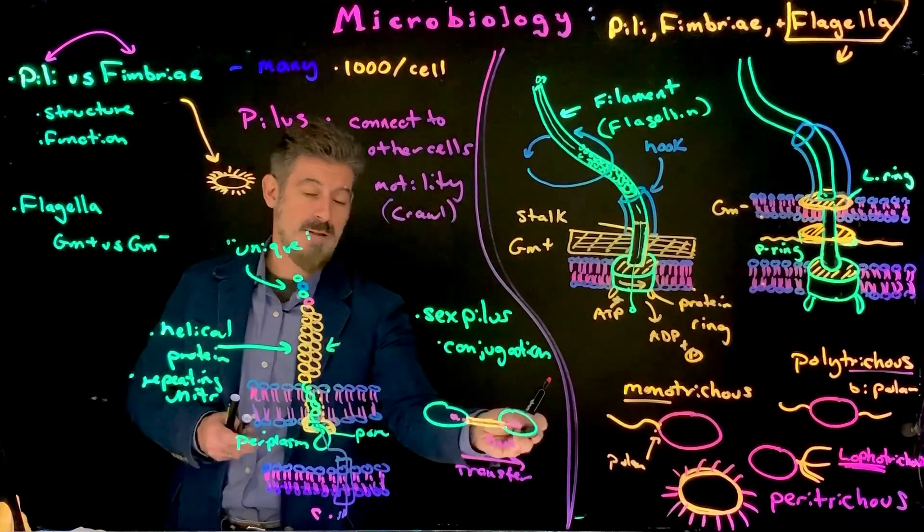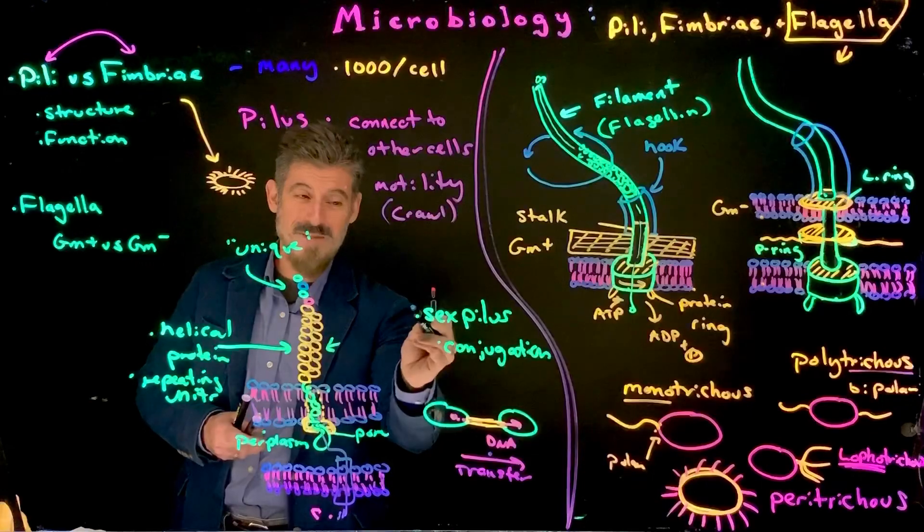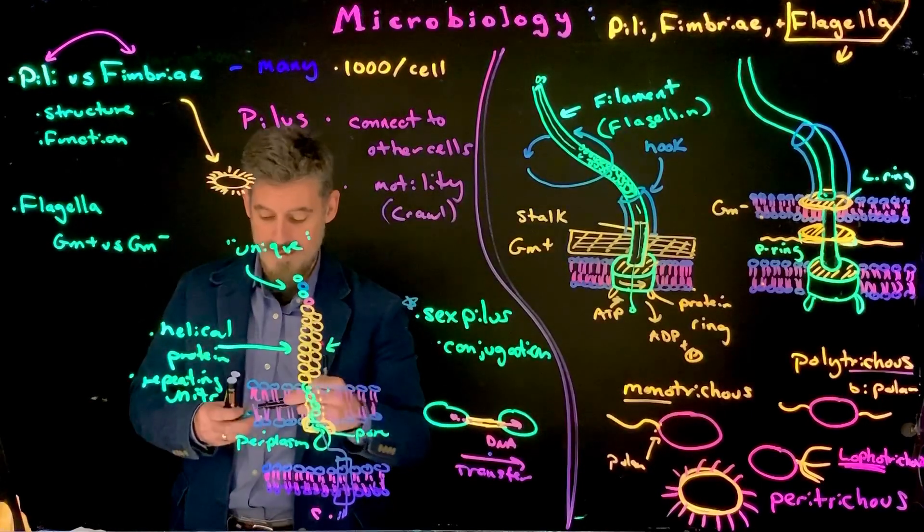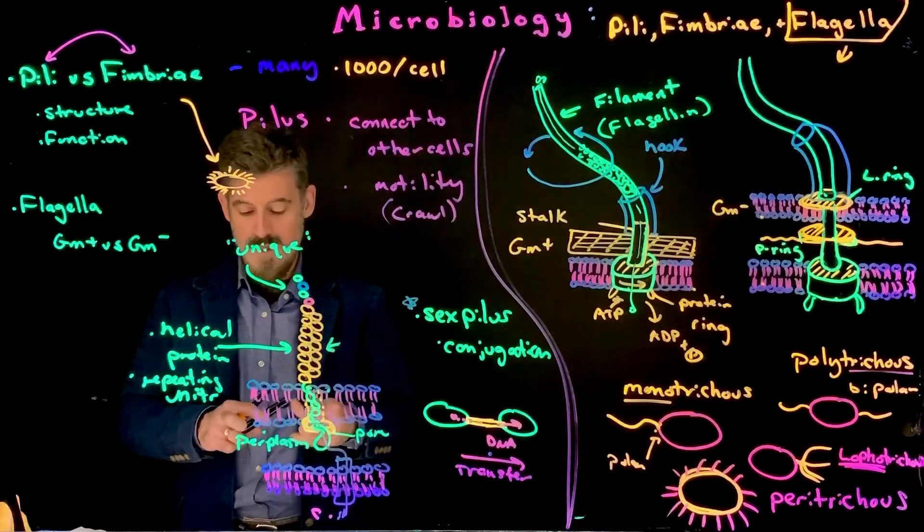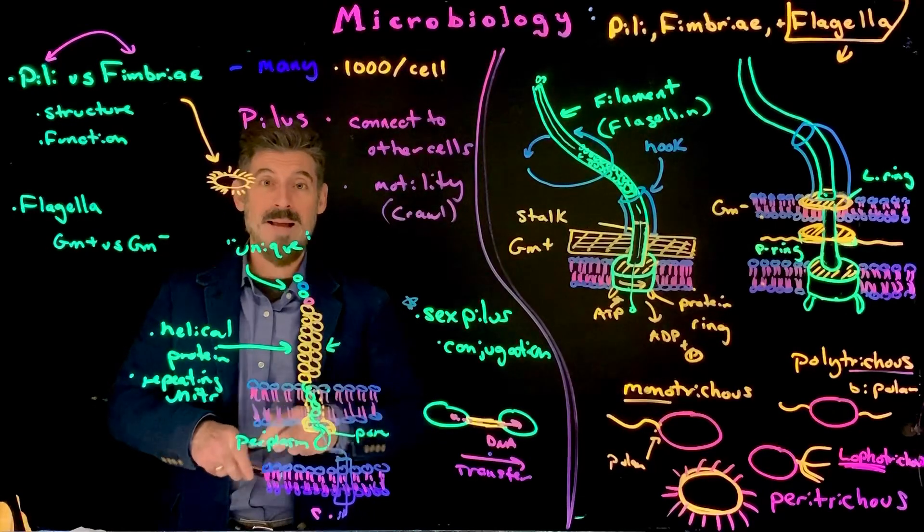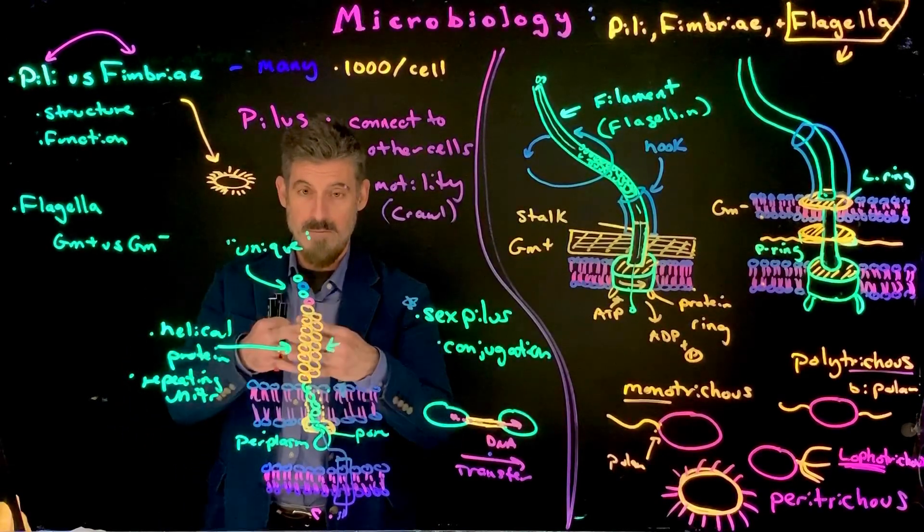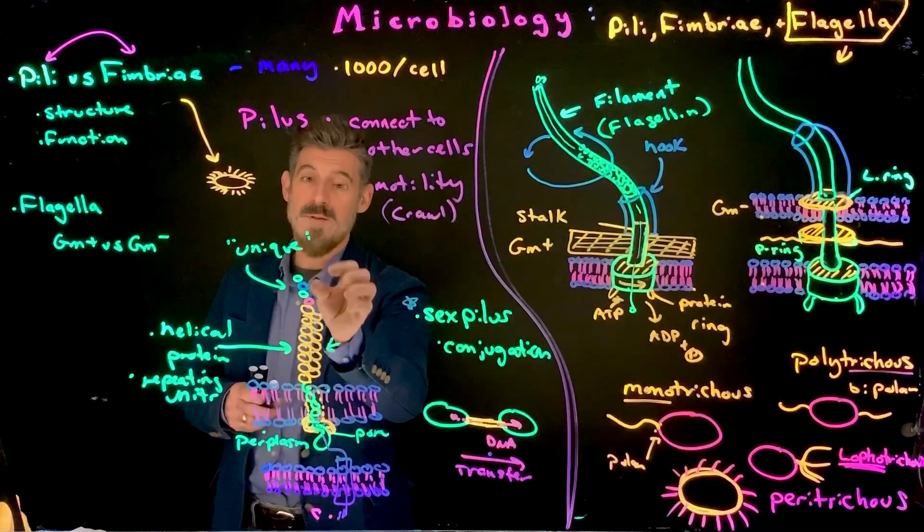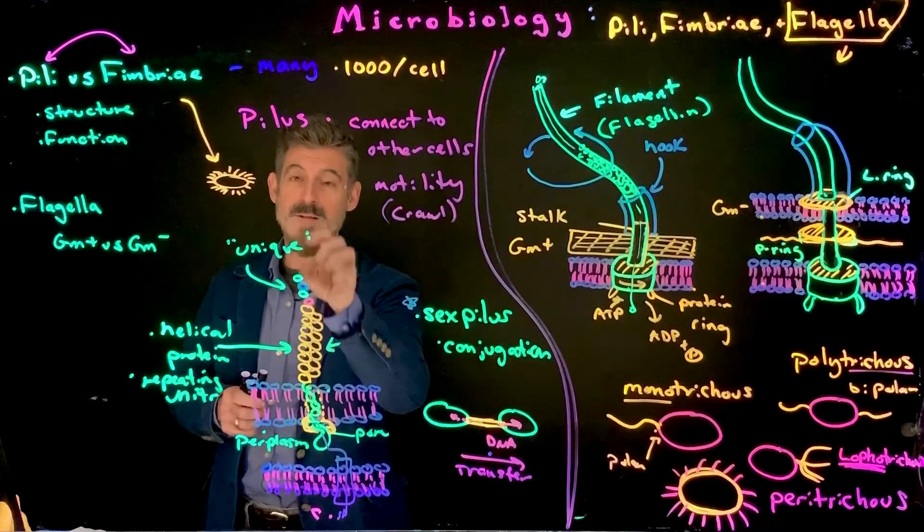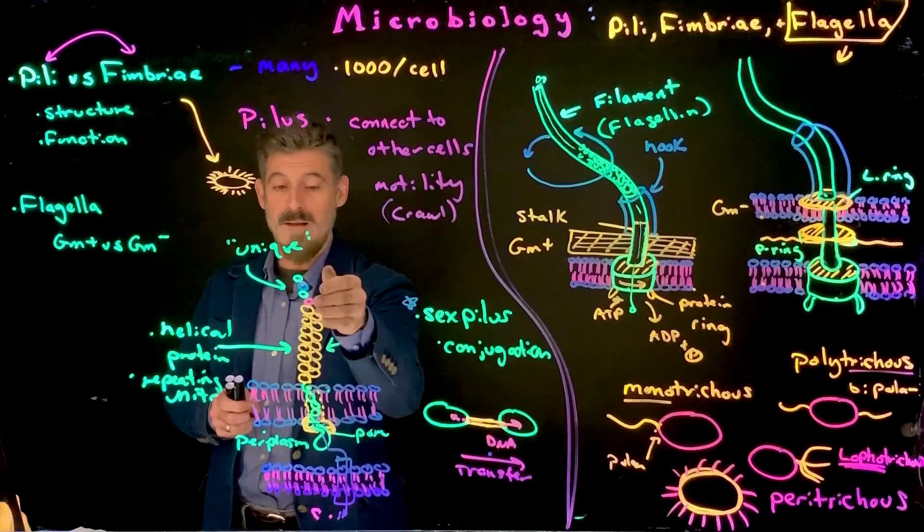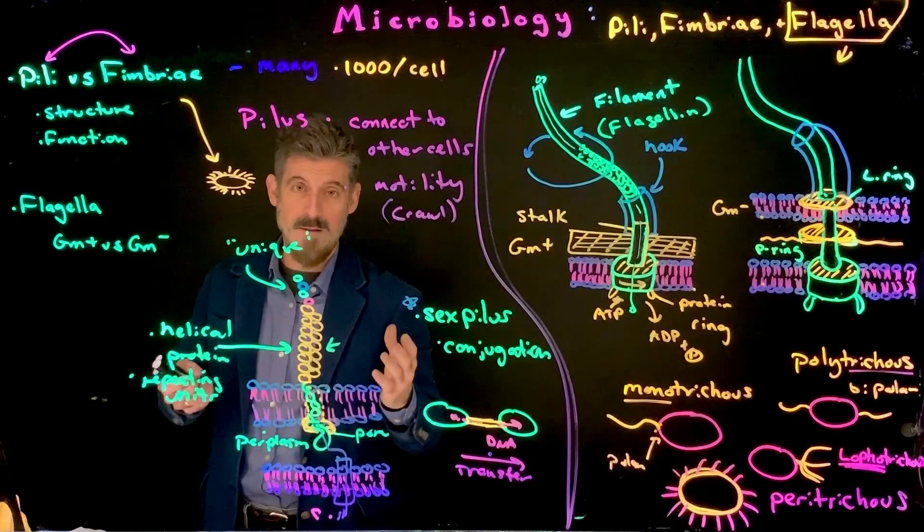It'll go through a pilus. It'll be larger and then connect it to another cell. That's a very specific, unique case, all right, that we're going to see in something called conjugation. But, in general, a pilus is mostly used for attachment itself, and that attachment can be specific because those specific proteins or amino acids are on the outer part of each pilus.